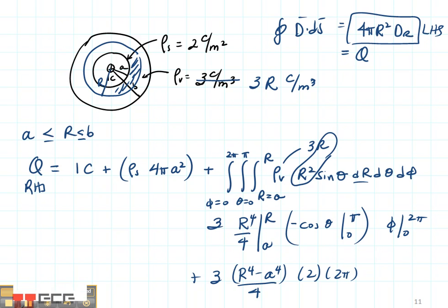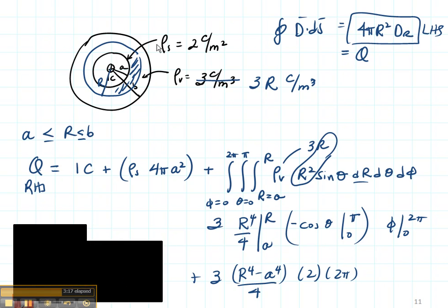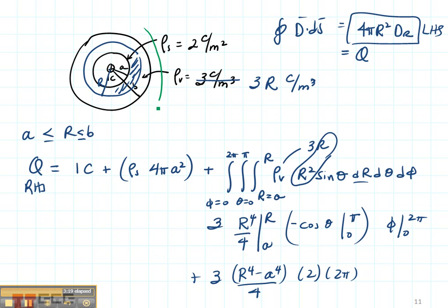Now what will happen if I am outside of B? Suppose that I am out here. So R is greater than or equal to B. In that case, my left-hand side stays exactly the same.